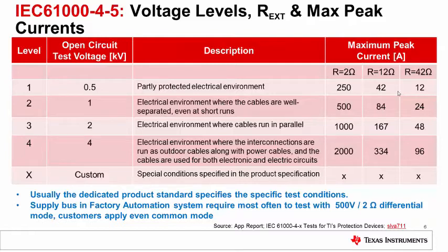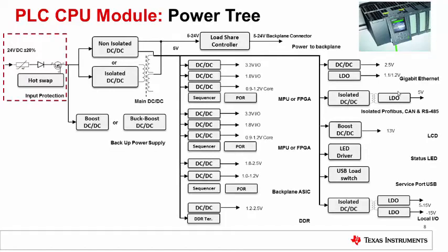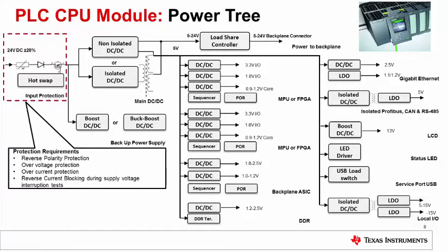The dedicated product standard specifies the specific test conditions. A typical supply bus in factory automation and control requires at least 500 V, 2 ohm surge compliance. As an example, consider a PLC CPU module powered from an external field power supply. This is the power tree of the end equipment, and because it is powered from an external supply, input protection is required.